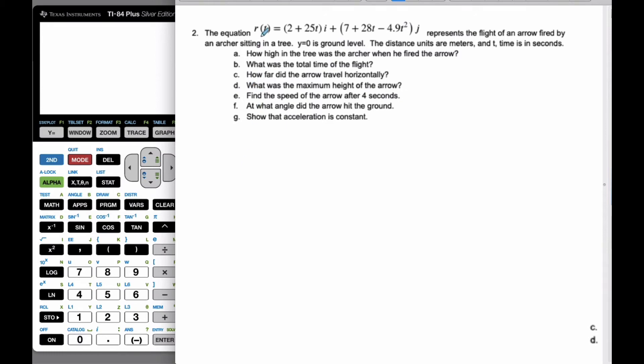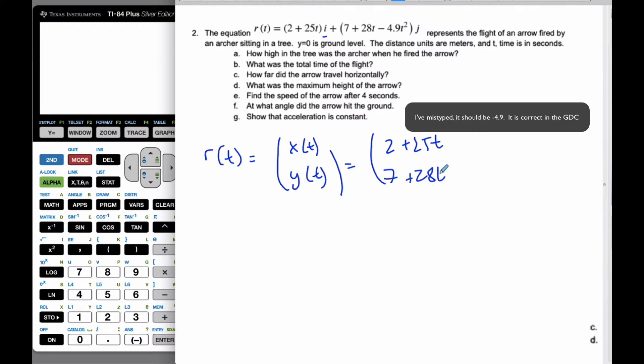Okay, so in this equation, we have r(t) = (2 + 25t)i + (7 + 28t - 4.9t²)j, where i is the horizontal component and j is the vertical component, and it represents the flight of an arrow fired by an archer in a tree. I can rewrite this as x(t), the horizontal component, and y(t), the vertical component, so it's really 2 + 25t for the horizontal and 7 + 28t - 9.8t² for the vertical.